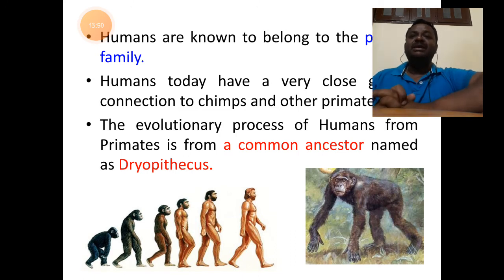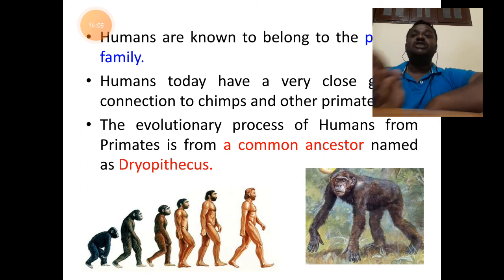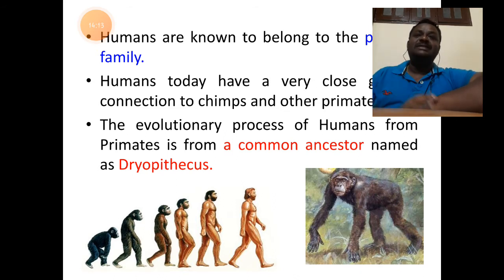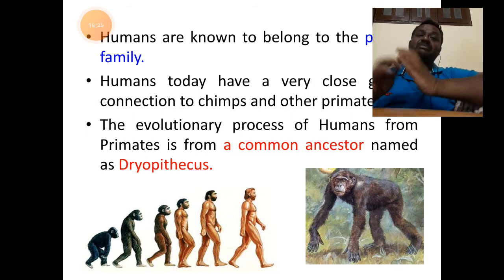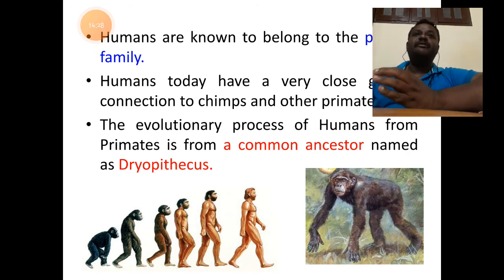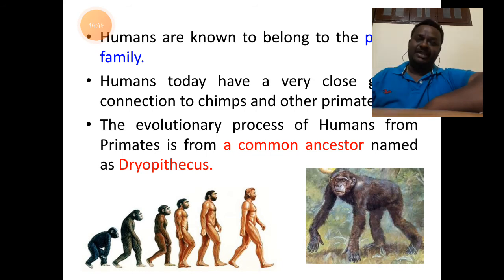Students remember: we the human beings are not evolved from monkeys and apes. We need to remove that concept if it exists in our minds. Monkeys, apes and human beings are all evolved from a common ancestor who lived on the trees — Dryopithecus. The study of Dryopithecus is not given in your syllabus, but we need to understand from whom we all originated.